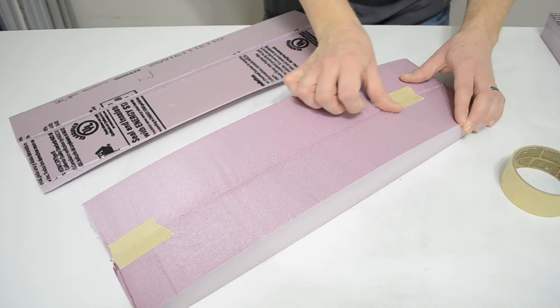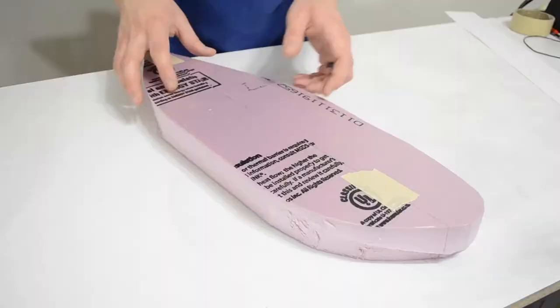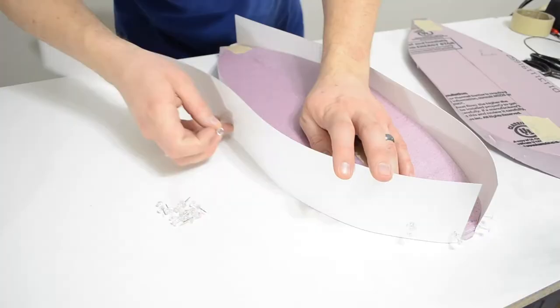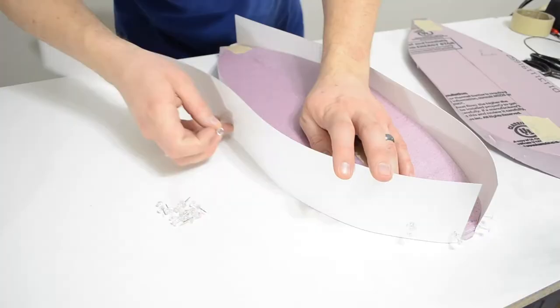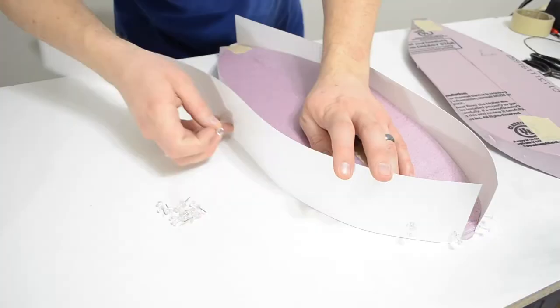I taped all the foam pieces together, and then used my template as a guide to cut out the shape of the paddle. I then pinned strips of poster board around the outside of the paddle, and I traced the outline onto the poster board. Then I cut it out.